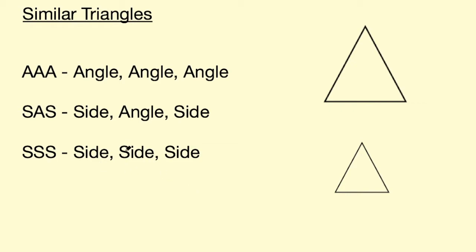The third test for similarity is side side side. So if you know all three sides of the triangle, and they're all in the same ratio, then you know those two triangles must be similar.